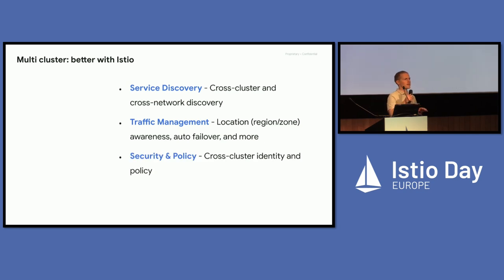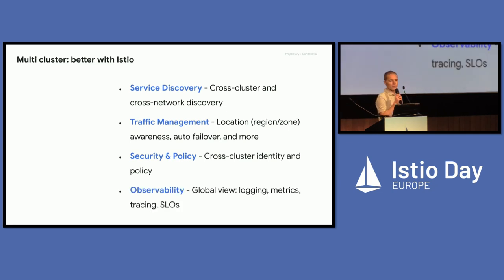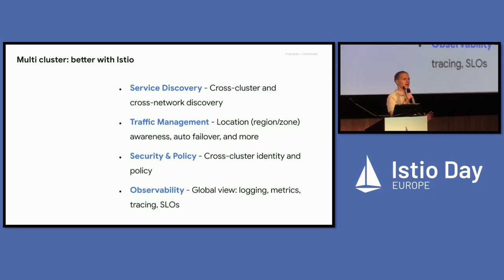We've also got security and policies. This is not super traditionally related to reliability, but if your application is compromised by an attacker, that could hurt your reliability. The policies and security that Istio provides carry over across multiple clusters, which differs from something like network policy, which is generally only applying to a single cluster. And finally, we have observability — Istio can provide a single pane of glass to observe all your applications, even across multiple clusters.